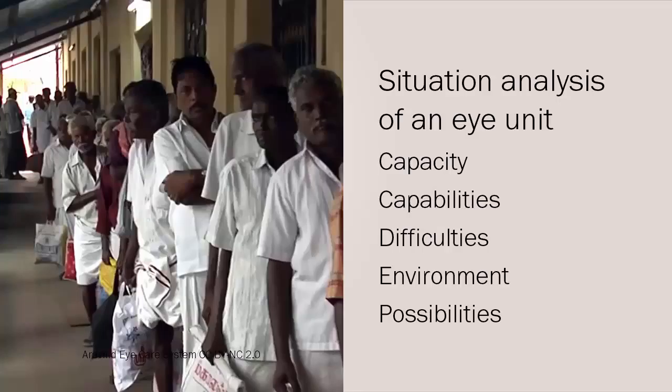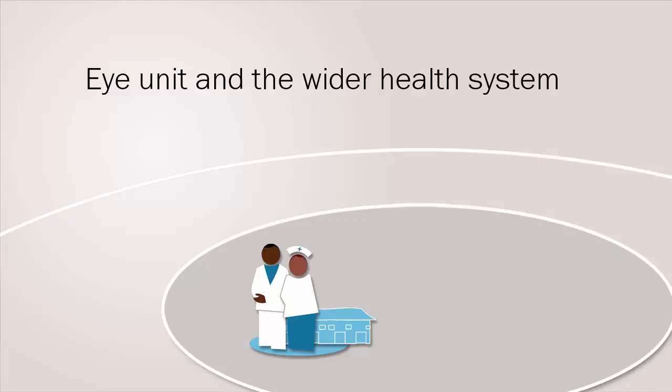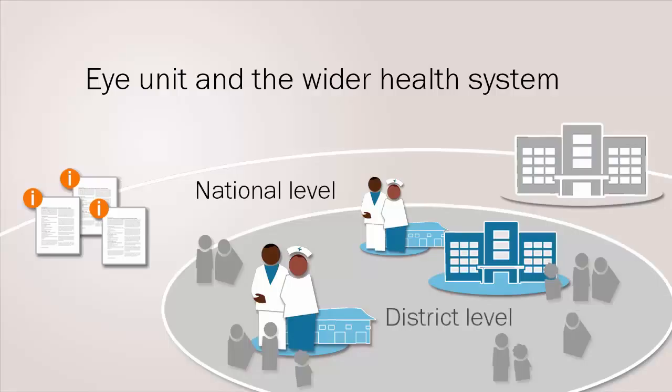Situation analysis helps us understand where we are now, which is the first stage in any planning cycle. Any situation analysis of an eye unit needs to remember to explore the wider levels of the health system that the unit is part of. Understanding existing policies and programs at national and district level means that the eye unit can plan to address the burden and need of blindness using the right models of care and with the right resources in place.